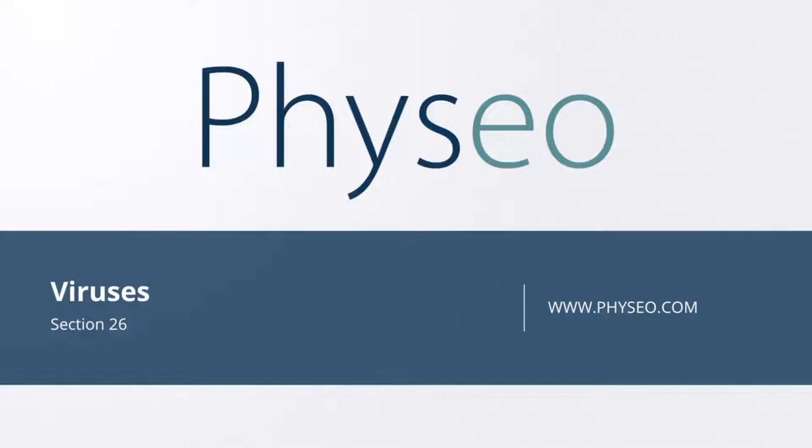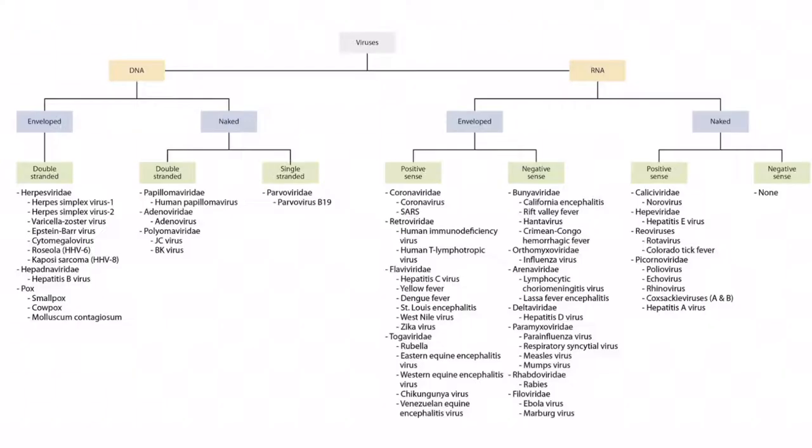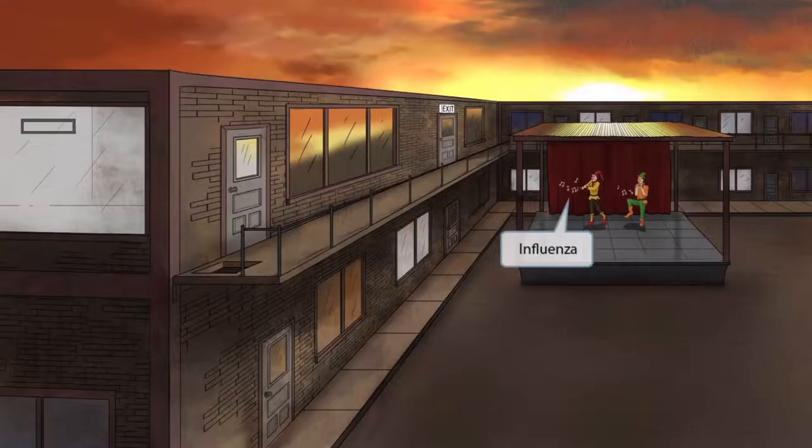Welcome to section 26 of Viruses. This is our virus overview figure, and in this video we'll be discussing influenza virus. This scene will take place near a small neighborhood concert with some people playing the flute. The flute sounds like influenza, so it will be our symbol for this virus.